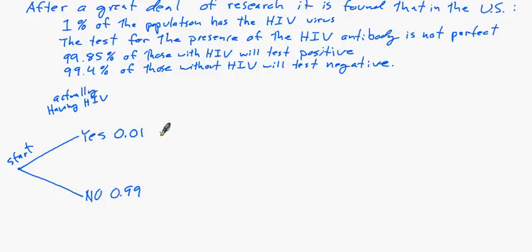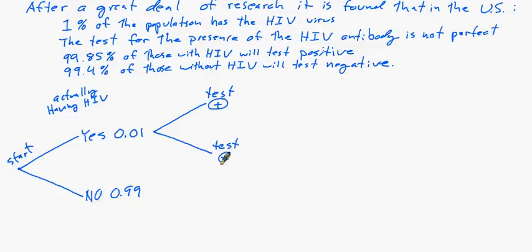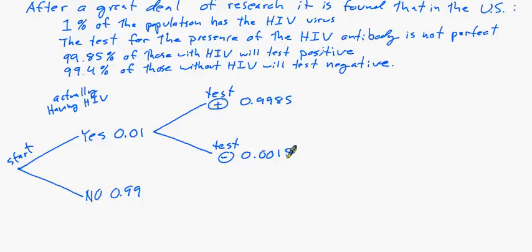Now, those who actually have the virus — most will test positive, but some will test negative. We write this as test positive and test negative. Of those with HIV, which is this branch, 99.85% will test positive. So we have 0.9985, and down here we would have the balance, which would be 0.0015.